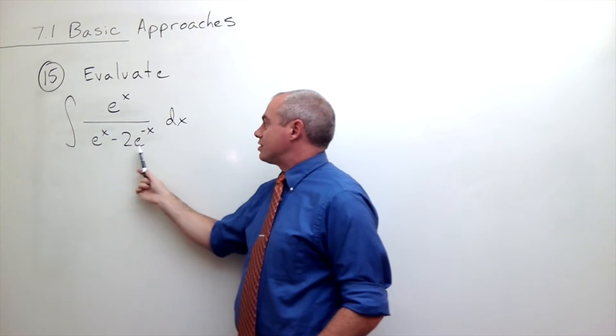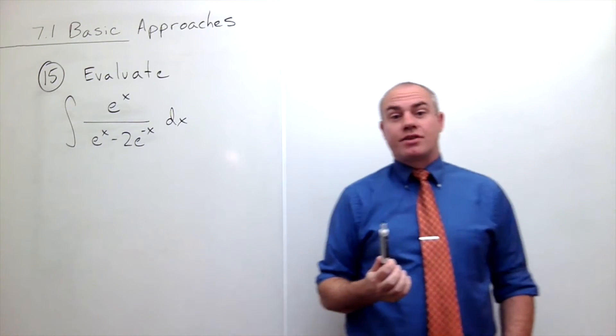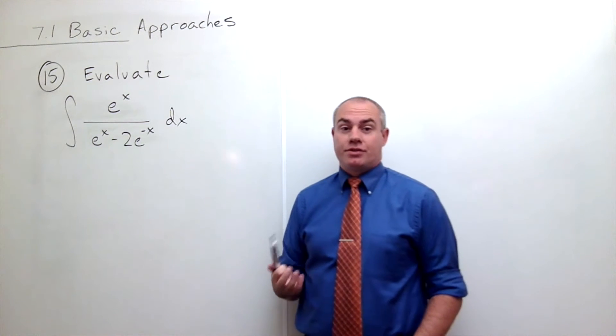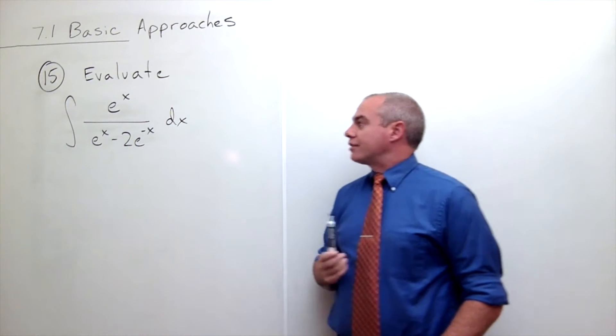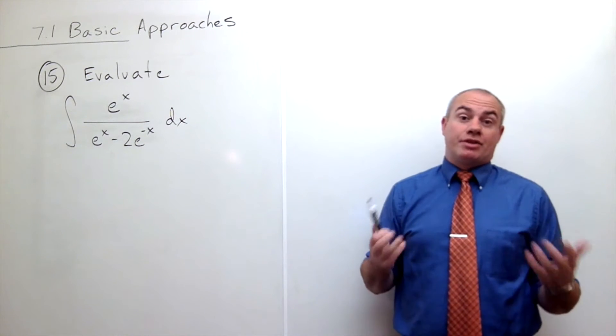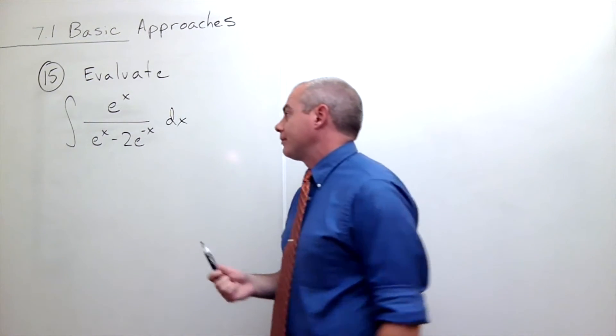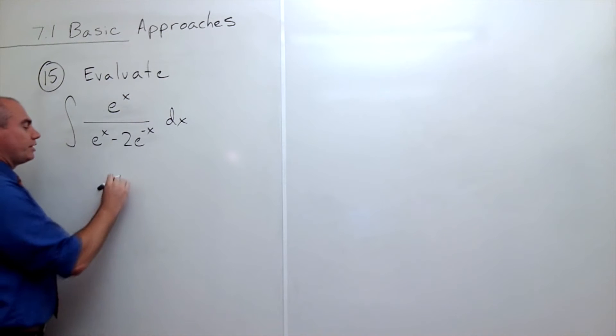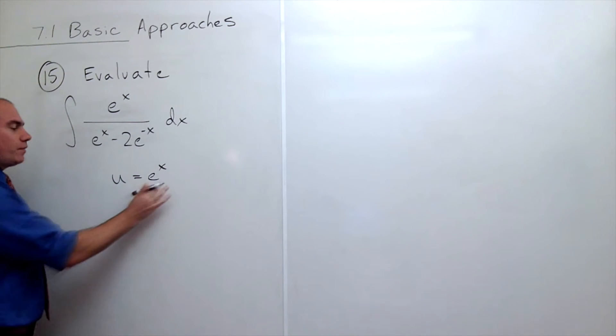Alright, so what I'm going to start out with here is a u substitution. There are a couple different things here that I could maybe try as a u substitution. One of them works well for me. The one that I'm going to use is I'm going to let u equal e to the x, and the reason why I want to choose e to the x and not e to the negative x or any of that is because...